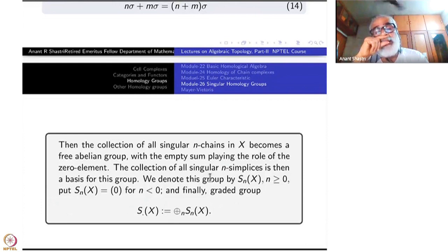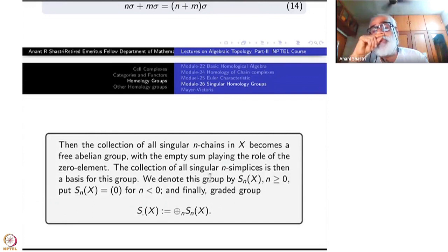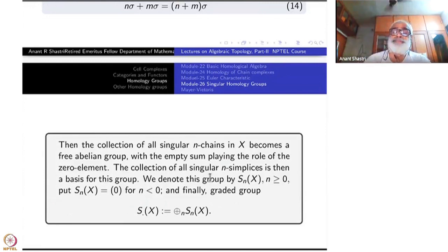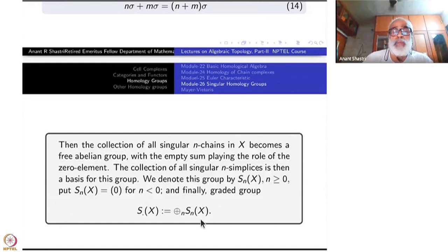By definition, S_N(X) is taken as 0 for N negative. The total graded group is S_•(X) = direct sum of S_N(X) over all N. So we have defined a singular simplex, then a chain, made a group out of the N-chains, and took the direct sum. Now we have a graded abelian group.